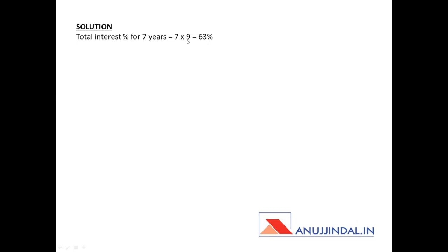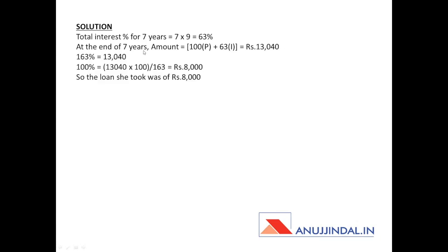The total interest for seven years can be calculated as 63 percent, because for one year it was nine percent, so for seven years it will be 9 × 7 = 63 percent. In simple interest, if we take the principal as 100 percent, then the total interest earned over seven years is 63 percent. So the amount paid at the end of seven years equals 100 percent principal plus 63 percent interest, totaling 13,040 rupees.